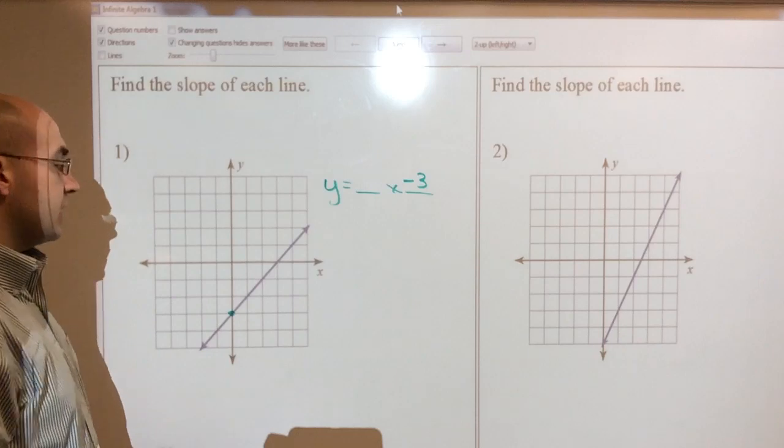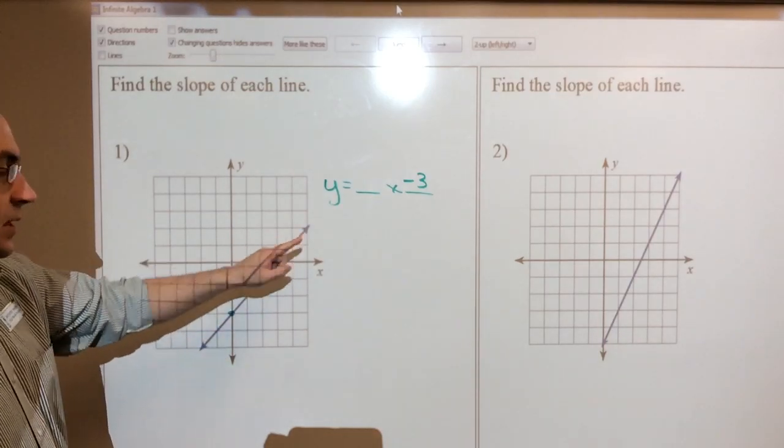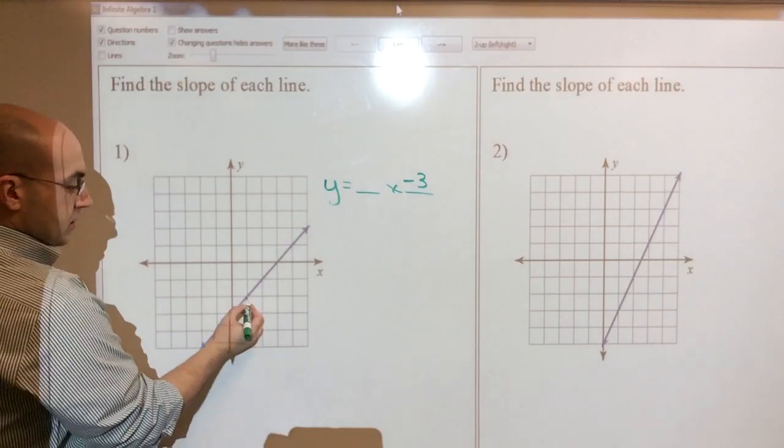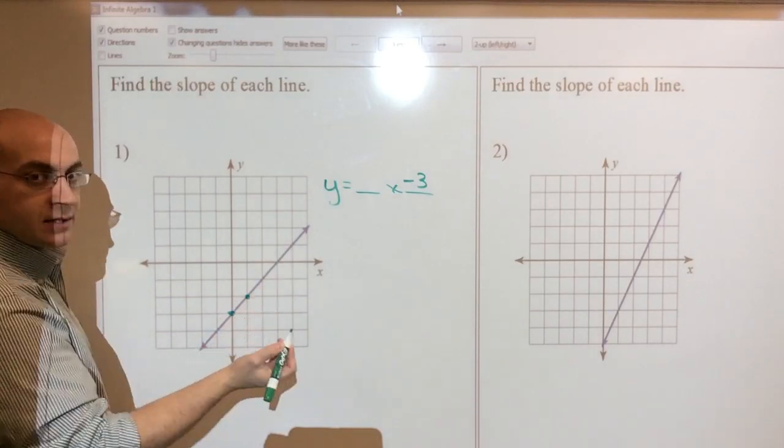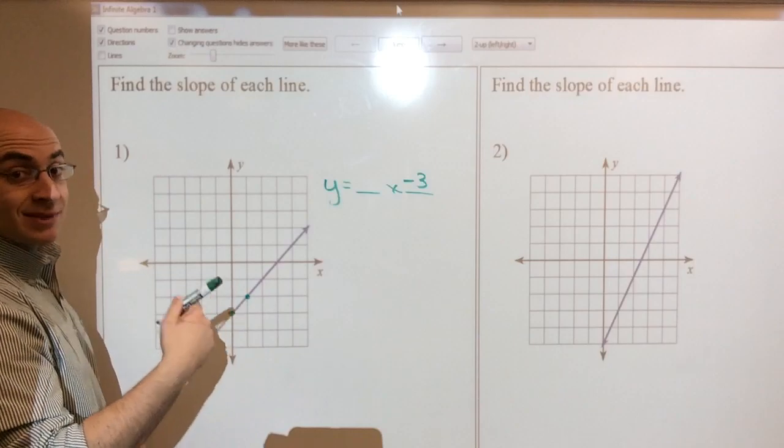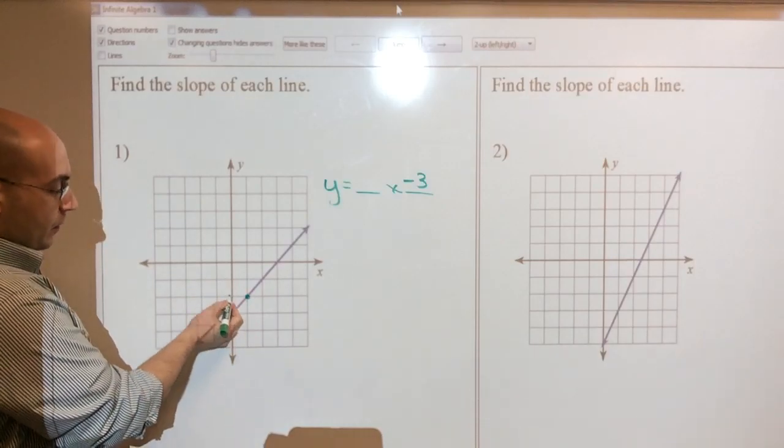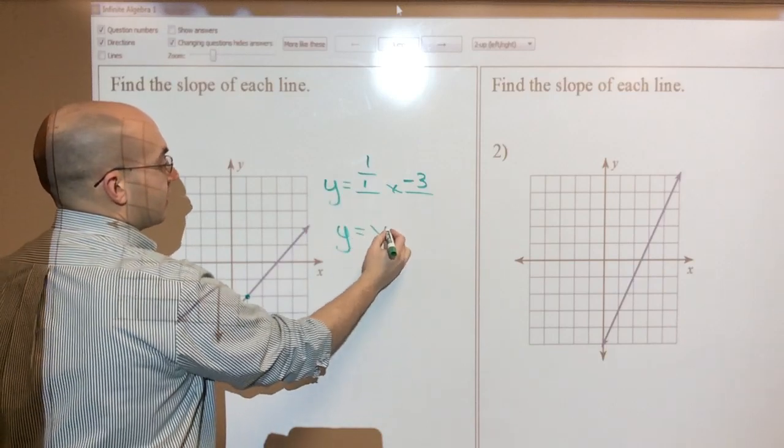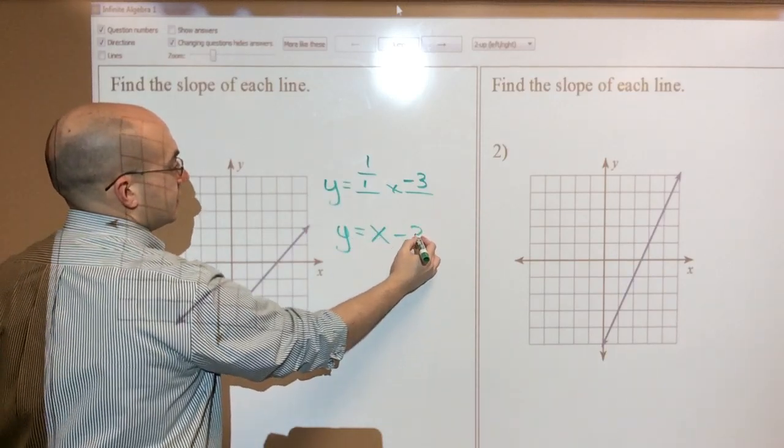And I need to find another good point. Well, it looks like they're all good points because they all cross on the corner of a box or at an intersection. So I'm just going to simply use this one. I could have used that one, it doesn't matter. They'll all be the same slope anyway. So this one goes up 1 over 1. So up 1 over 1 is 1 over 1.